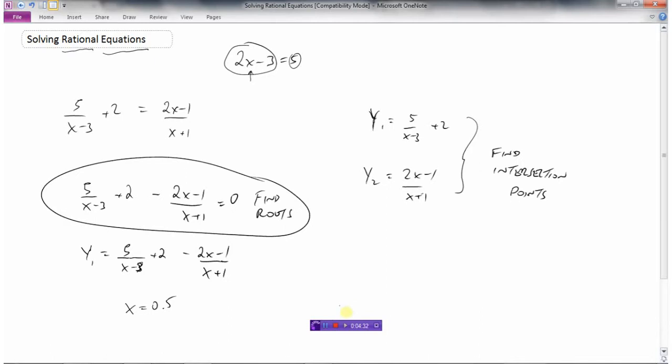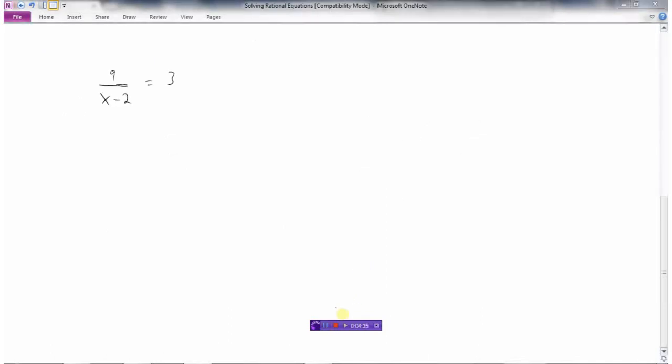Let's look at how we would solve rational equations algebraically. Here's a very simple rational equation: 9 divided by x minus 2 equals 3.